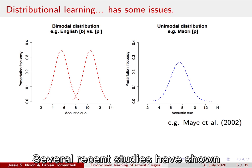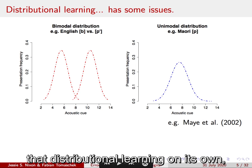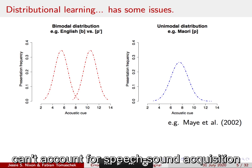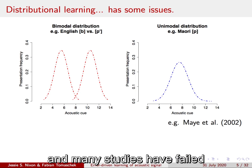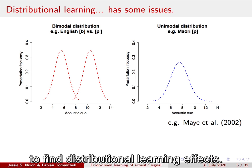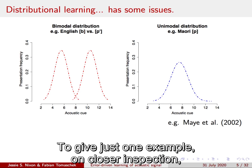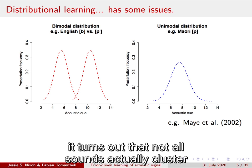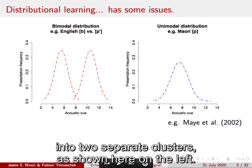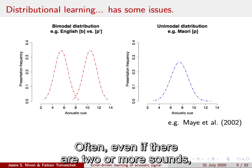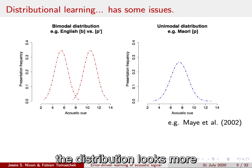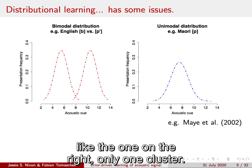Several recent studies have shown that distributional learning on its own can't account for speech sound acquisition, and many studies have failed to find distributional learning effects. To give just one example, on closer inspection, it turns out that not all sounds actually cluster into two separate clusters as shown here on the left. Often, even if there are two or more sounds, the distribution looks more like the one on the right, only one cluster.